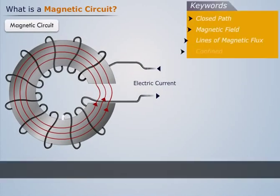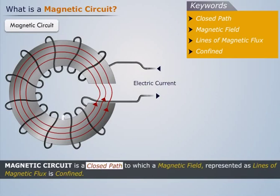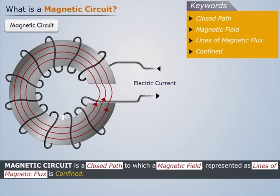Thus, magnetic circuit is a closed path to which a magnetic field represented as lines of magnetic flux is confined.